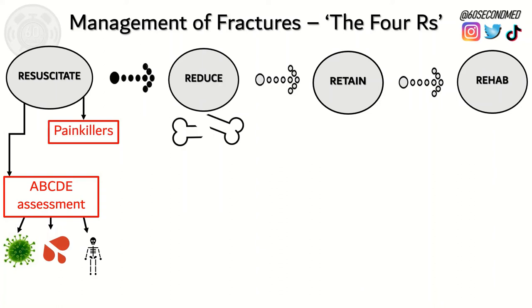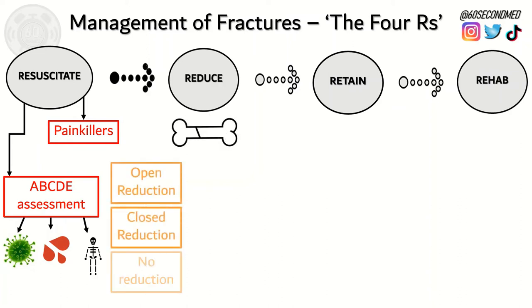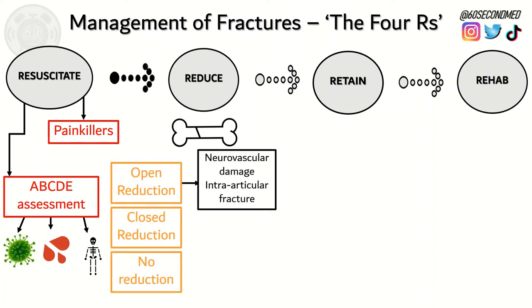Reducing a fracture is how we get a displaced fracture, such as shown, back into the correct anatomical position. This can be done via open reduction — a surgical procedure indicated with neurovascular damage or an intra-articular fracture involving a joint space.